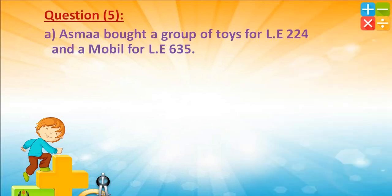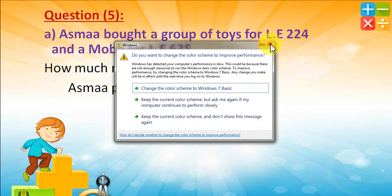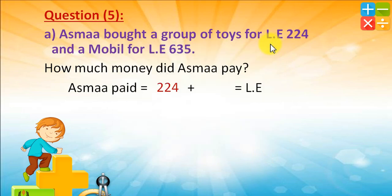Question 5: Asmaq bought a group of toys for 224 pounds and a mobile for 635 pounds. How much money did Asmaq pay? 224 plus 635: 4 plus 5 equals 9 in units; 2 tenths plus 3 tenths equals 5; 2 hundreds plus 6 hundreds equals 8. So 859 pounds. Well done!